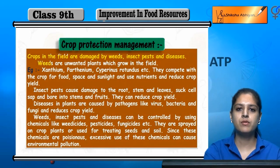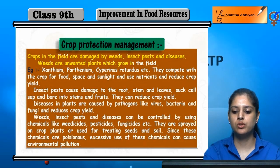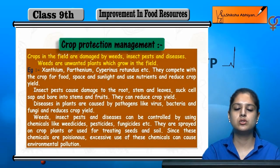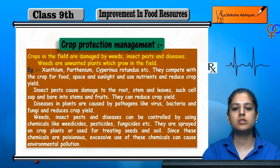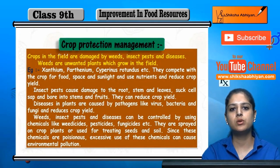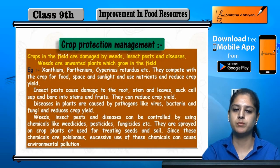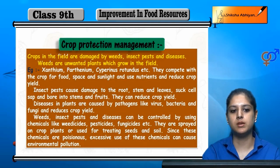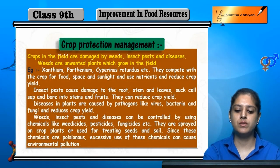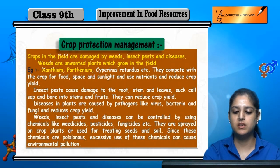So what are weeds? Weeds are unwanted plants which grow in the field. They also need some nutrients — they use crop nutrients, so the crops don't get proper nutrients and the crop is poor. Examples of weeds are xanthium, parthenium, etc.